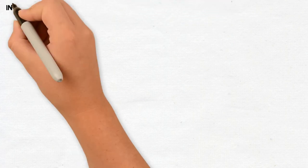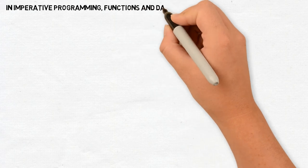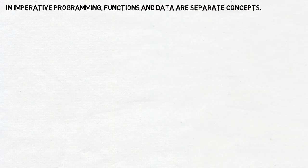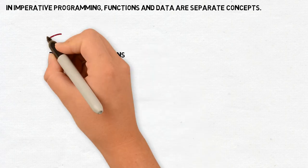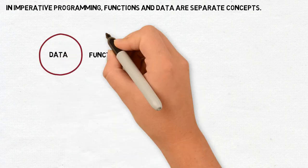In imperative programming, functions and data are separate concepts. Data is what a function works on. A function is what works on data. They belong to different worlds.